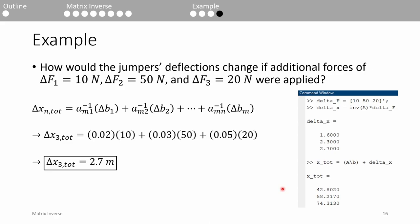Now we have to combine superposition and proportionality. Let's just look at jumper 3 for now. We can apply this formula and plug in the delta b's, or in this case the delta f's, and we can see that the third jumper will displace by an extra 2.7 meters.